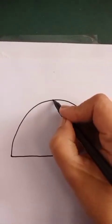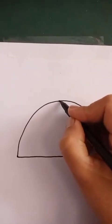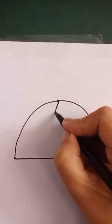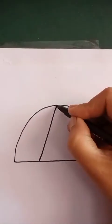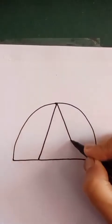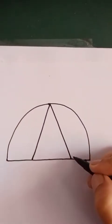Now we will come here, in the center. We will put one dot here and from this dot we will make a slanting line in this direction and one more slanting line in this direction.